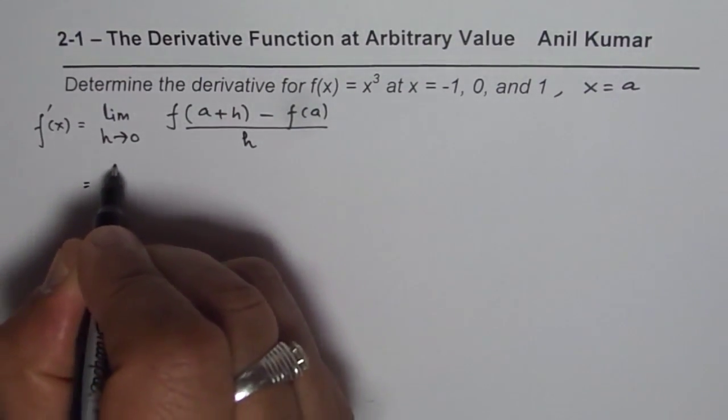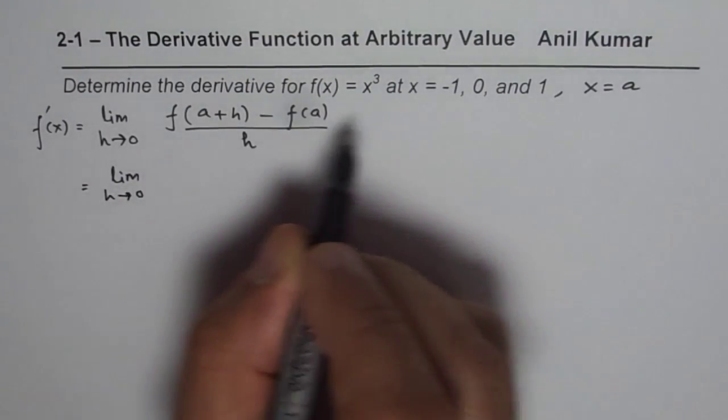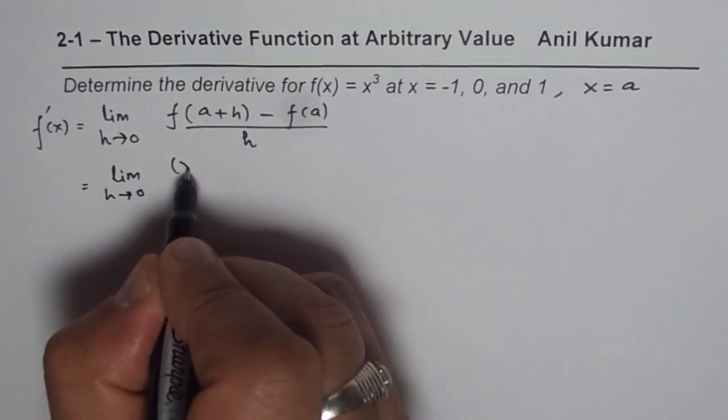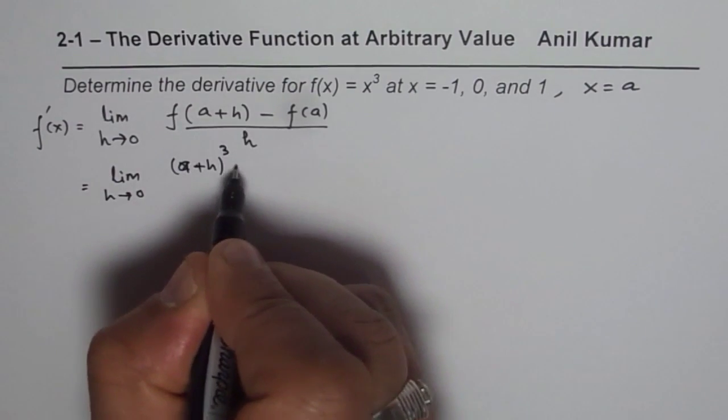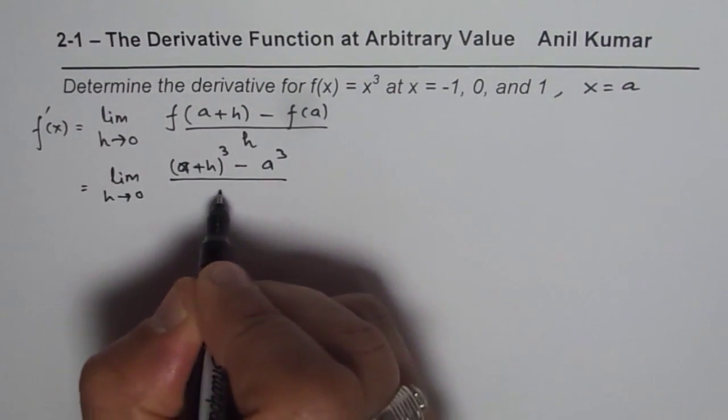In this case, the function is a cubic function. So we will replace a + h for x. So we get [(a+h)³ - a³]/h.